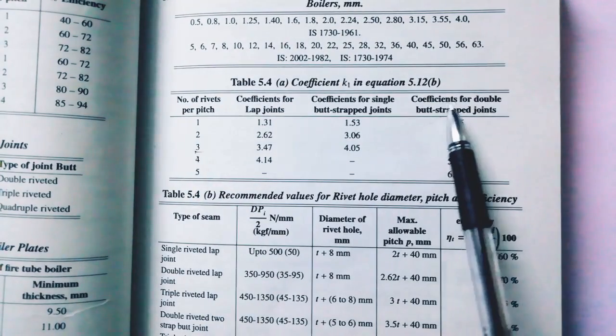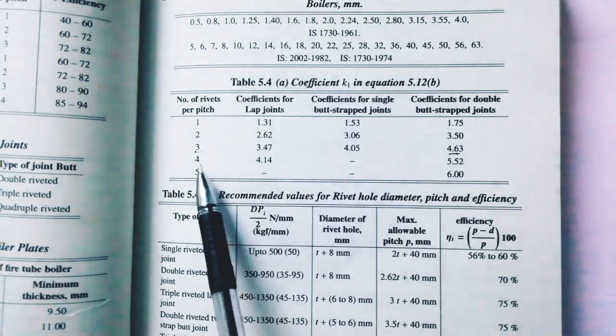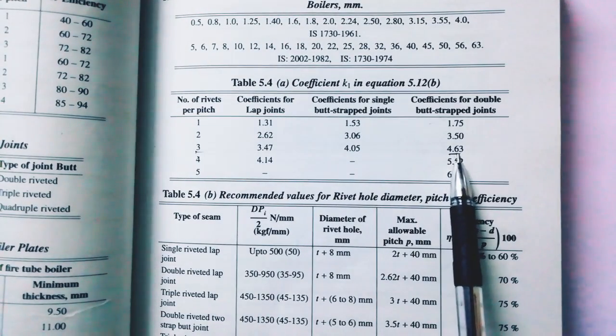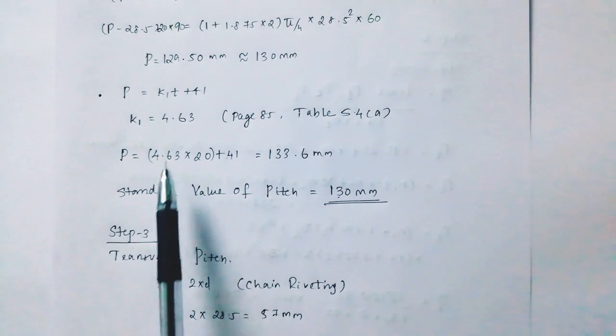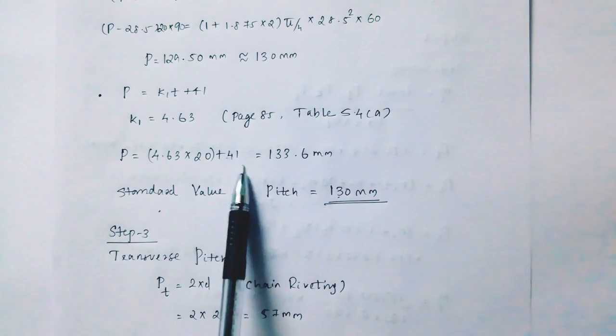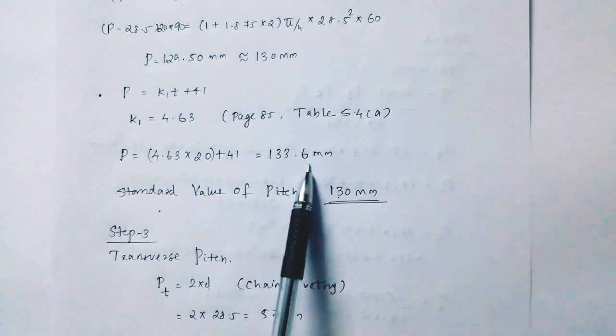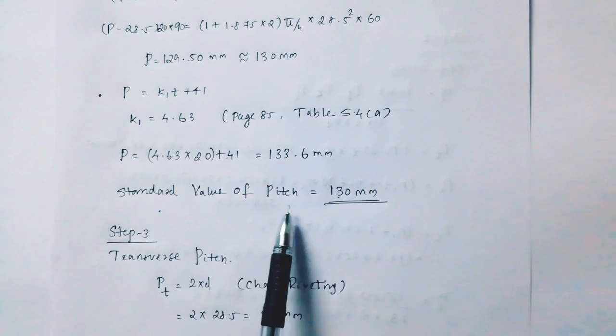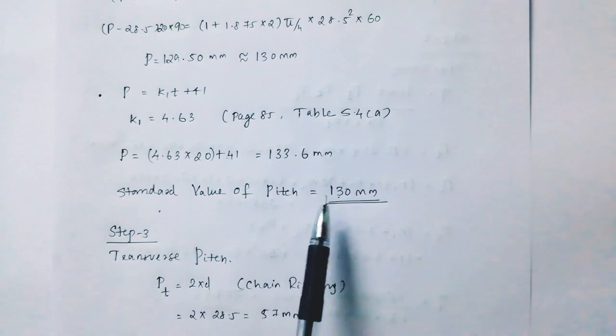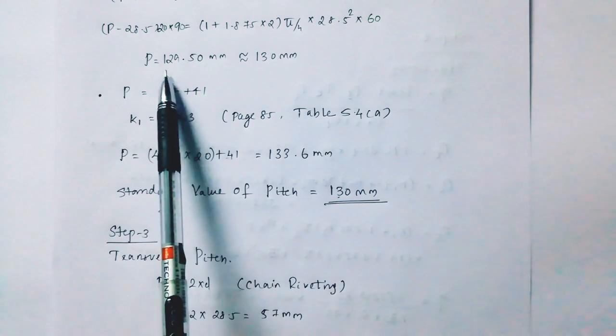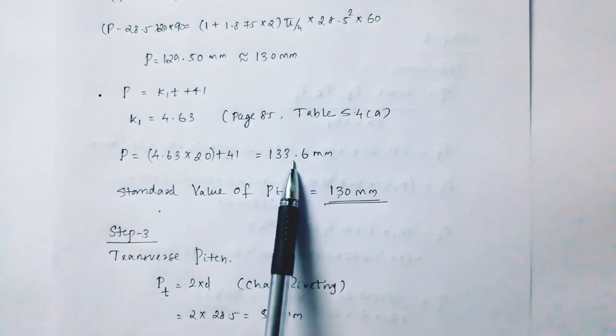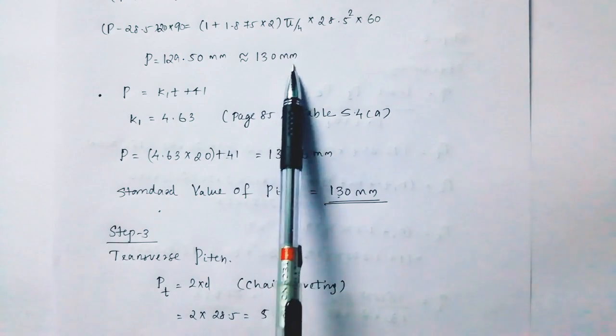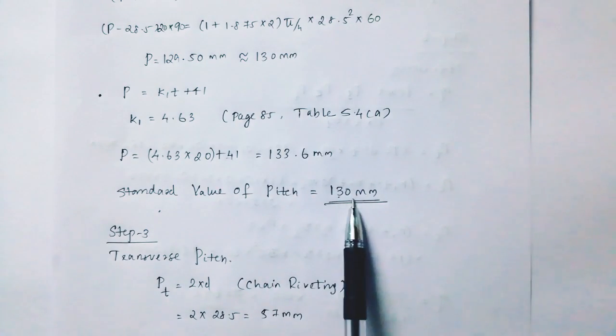The number of rivets is 4.63. We choose a standard value of pitch of 130 mm.